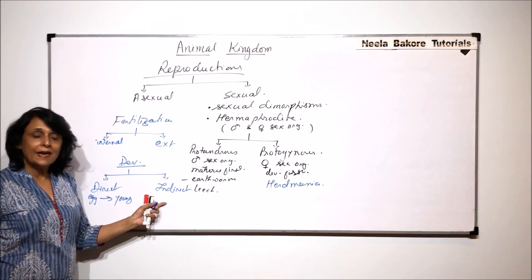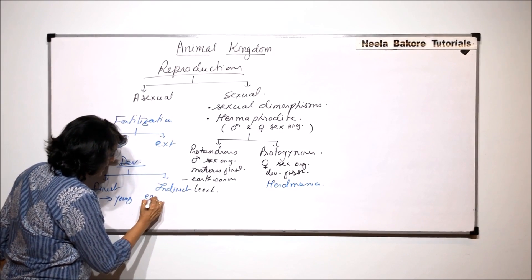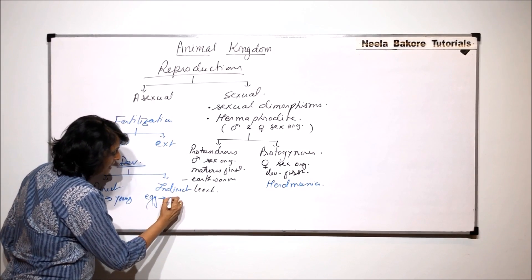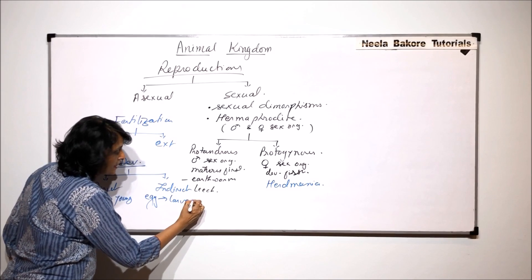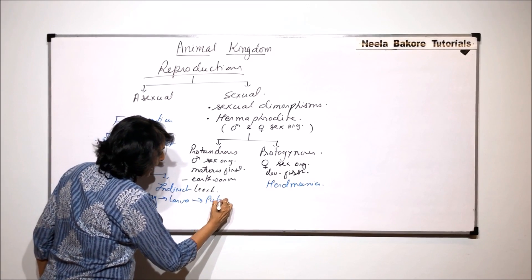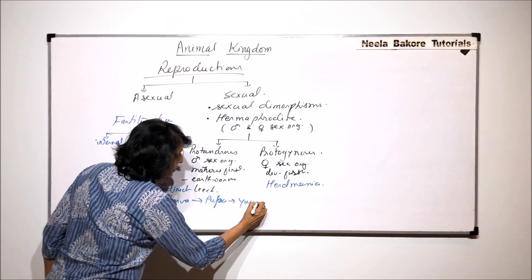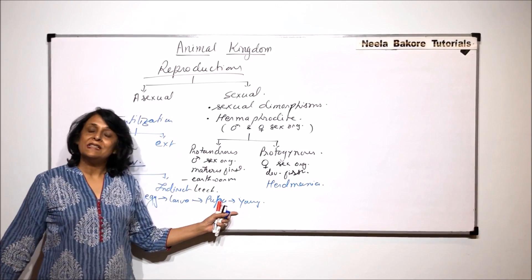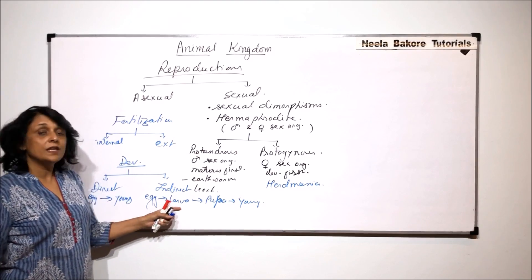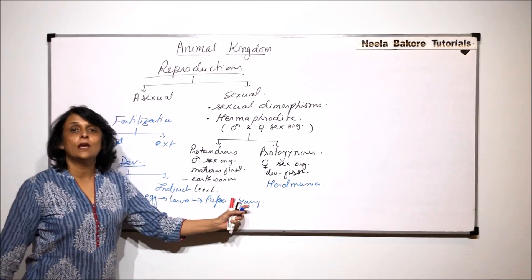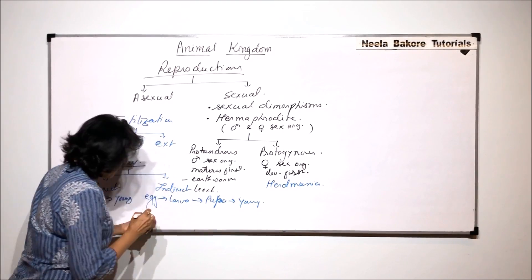Whereas in case of indirect, what happens is from the egg comes out a larva. This larva changes into pupa. And then pupa changes into the young one which grows into the other stage. Now this change from egg to young is known as metamorphosis.